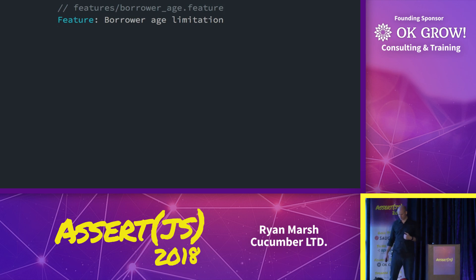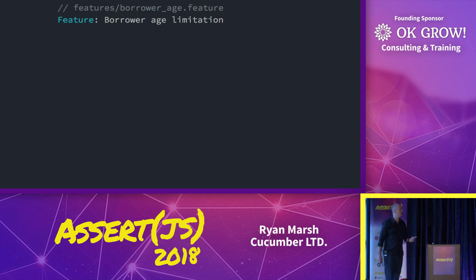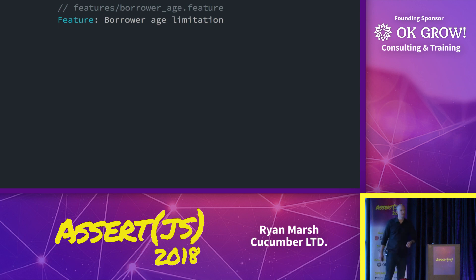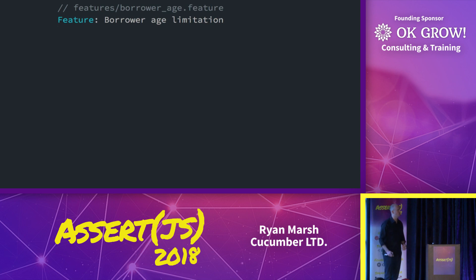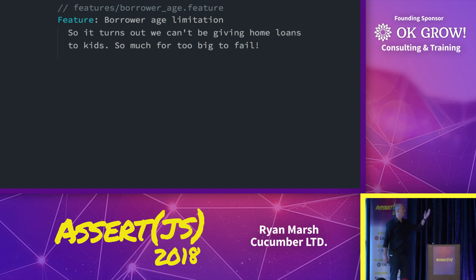So, natural language description. In Cucumber, we start off with something called a feature file. The feature file starts out with 'feature:' and it has a title. This is the beginning of our natural language description of the software. There is some structure to this — English is a context-sensitive language, and in order for a parser to interpret it, we have to put it into some sort of a context-free grammar. So we do apply some structure, but it's natural language.